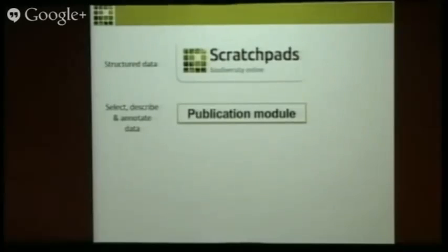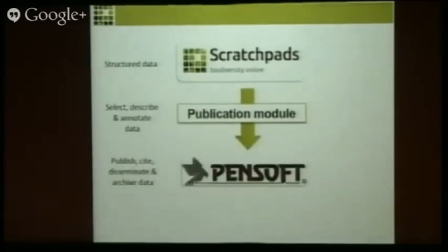The next step would be to allow data publication through the Scratchpads environment into a journal. That would create a seamless data workflow and transform Scratchpads into a one-stop shop for biodiversity data handling. The whole idea is to allow structured data already in a Scratchpad to be selected, described, and properly annotated so that it can be directly pushed for publication into a journal.